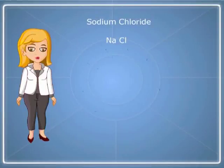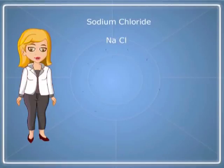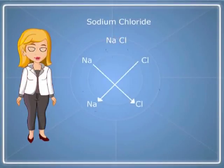Let us see the formula of sodium chloride. The valency of sodium is 1 and the valency of chloride is also 1. When the numbers are criss-crossed, we get the formula of sodium chloride, NaCl.